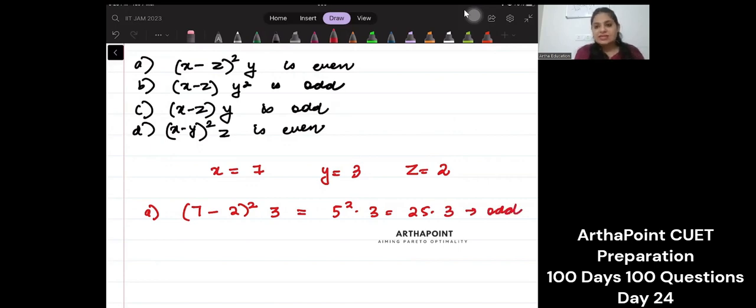Isn't it? x minus z is itself 7 minus 2, 5 whole square is 25 into 3 is 75. It's odd. So this itself is an incorrect statement.